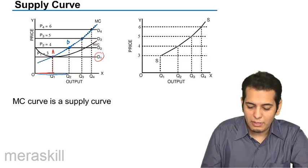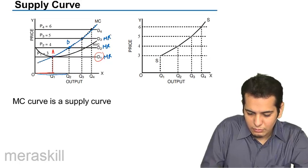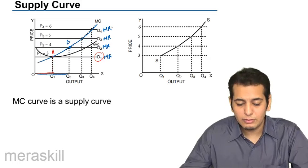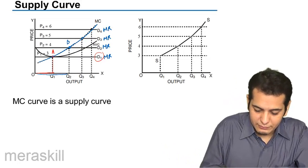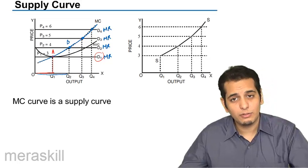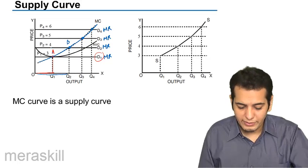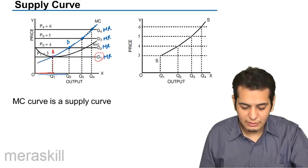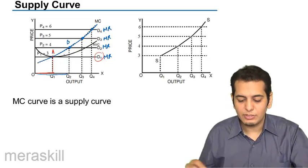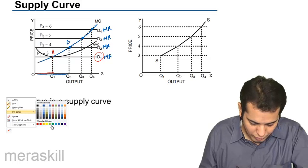The firm should produce the quantity where marginal cost equals marginal revenue. The demand curve is nothing but the marginal revenue curve, so equilibrium is at the point where the marginal cost curve cuts the marginal revenue curve from below. In the second case, where price rises, the firm produces more up to where MC equals MR — that is point B.